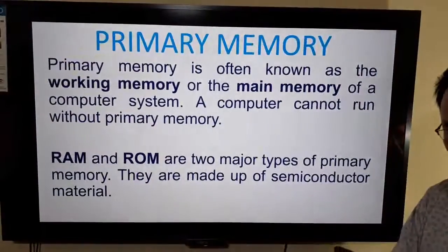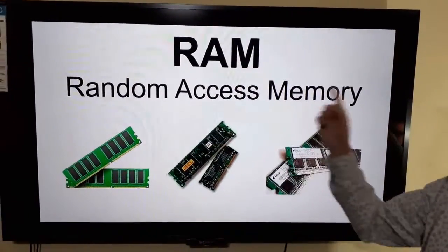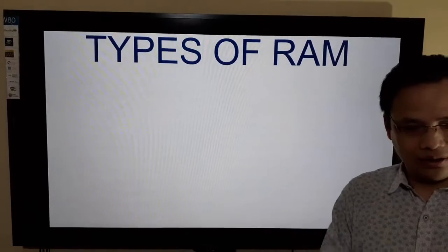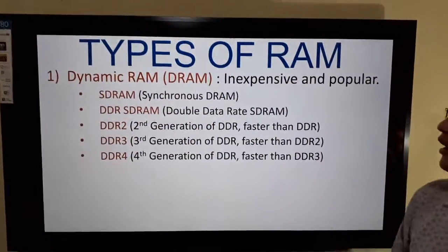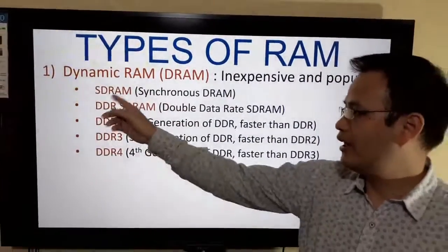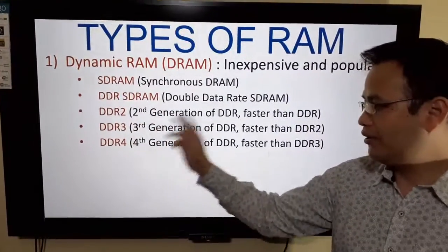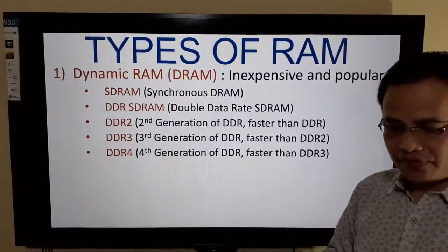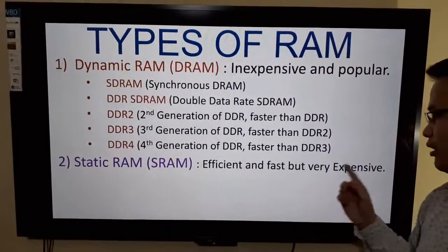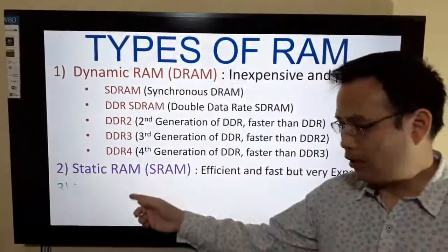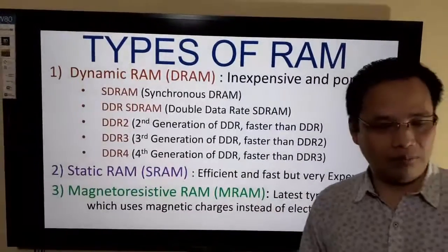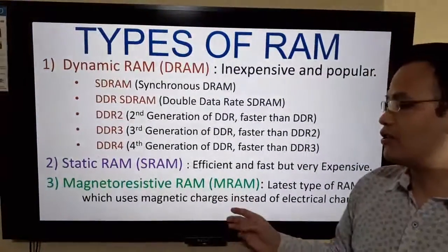RAM stands for Random Access Memory. The first type is Dynamic RAM or DRAM, which is inexpensive and popular. Its subtypes include SDRAM, DDR, DDR2, DDR3, and DDR4. The second type is Static RAM or SRAM, which is very efficient and fast but very expensive. The third type is Magnetoresistive RAM or MRAM, the latest type of RAM, which uses magnetic charges instead of electrical charges.